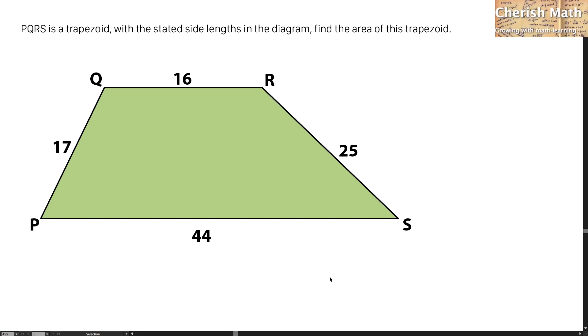Hi from Cherish Math. Here is the question. PQRS is a trapezoid with the stated side lengths in the diagram. Find the area of this trapezoid.